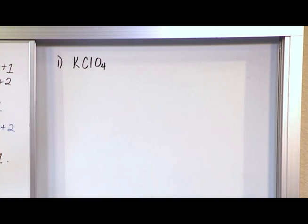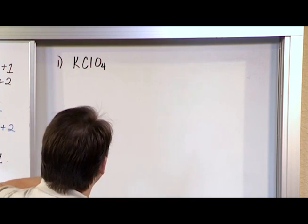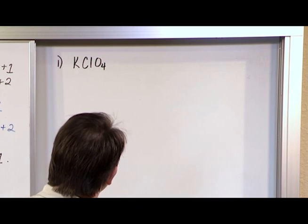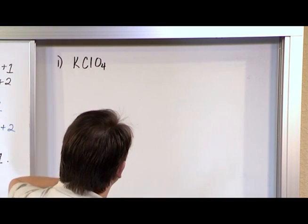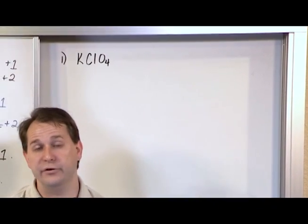If you just look at it, if you look at the periodic table, you're going to say to yourself, potassium likes to have a charge of plus one, chlorine likes to have a charge of minus one, and oxygen likes to have a charge of minus two. That's what we would typically say from everything we've learned up until this point.